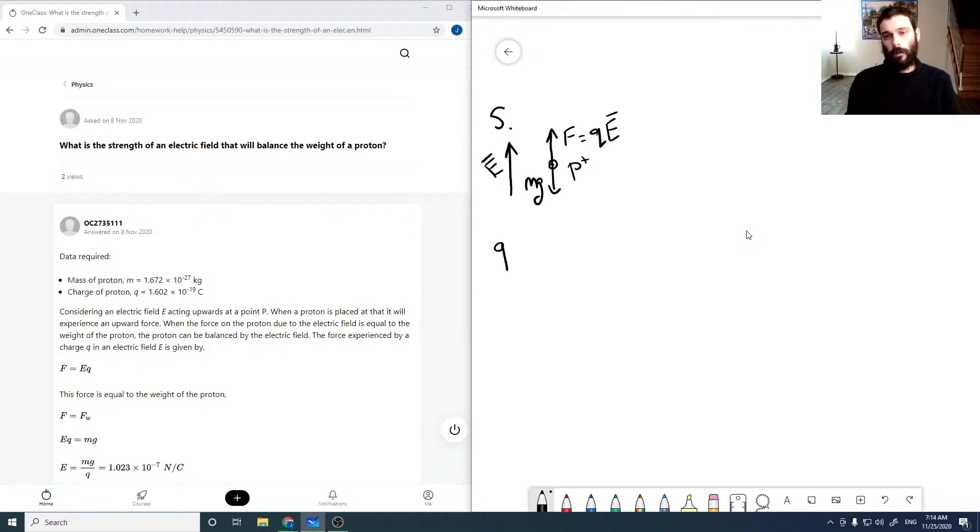To put this in equation form, we want QE minus mg to equal ma, but we want it to be balanced so we want no acceleration. So we want that to equal zero. Rearranging, we want QE to equal mg, or our electric field to be mg over Q.